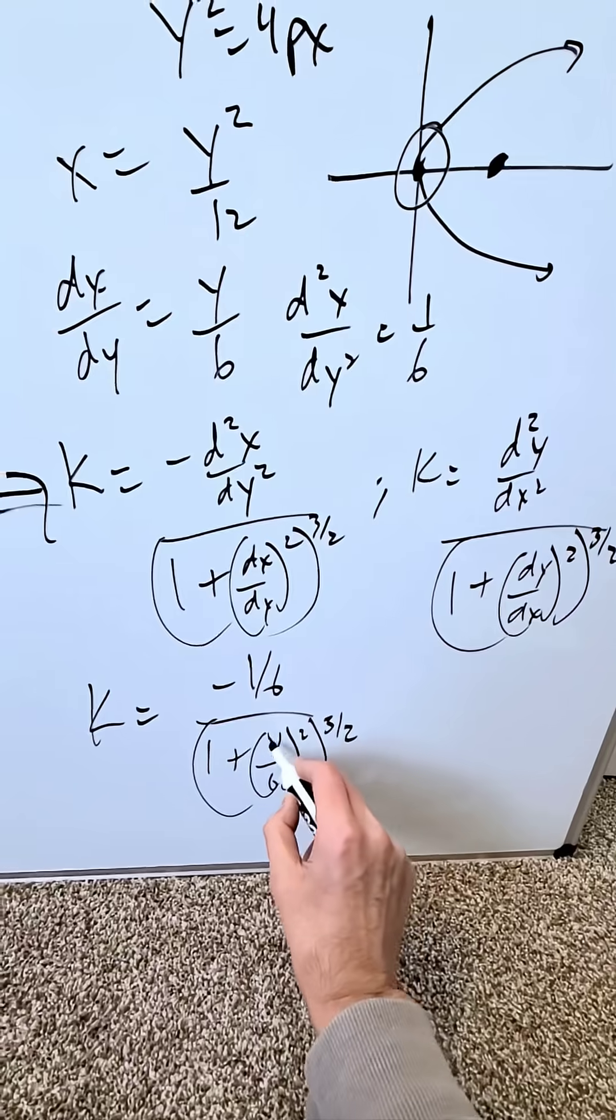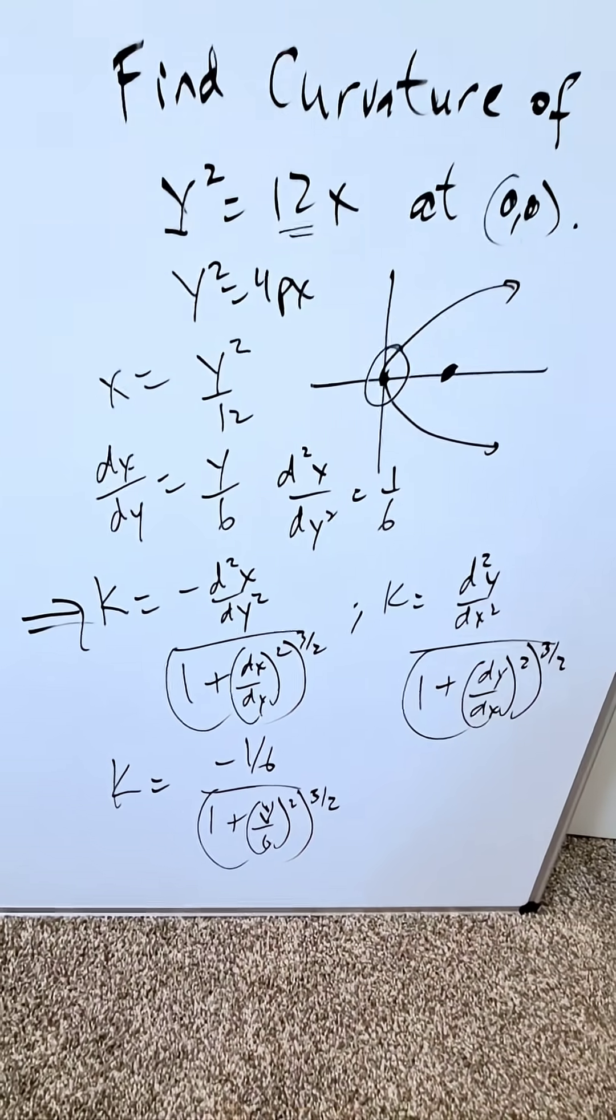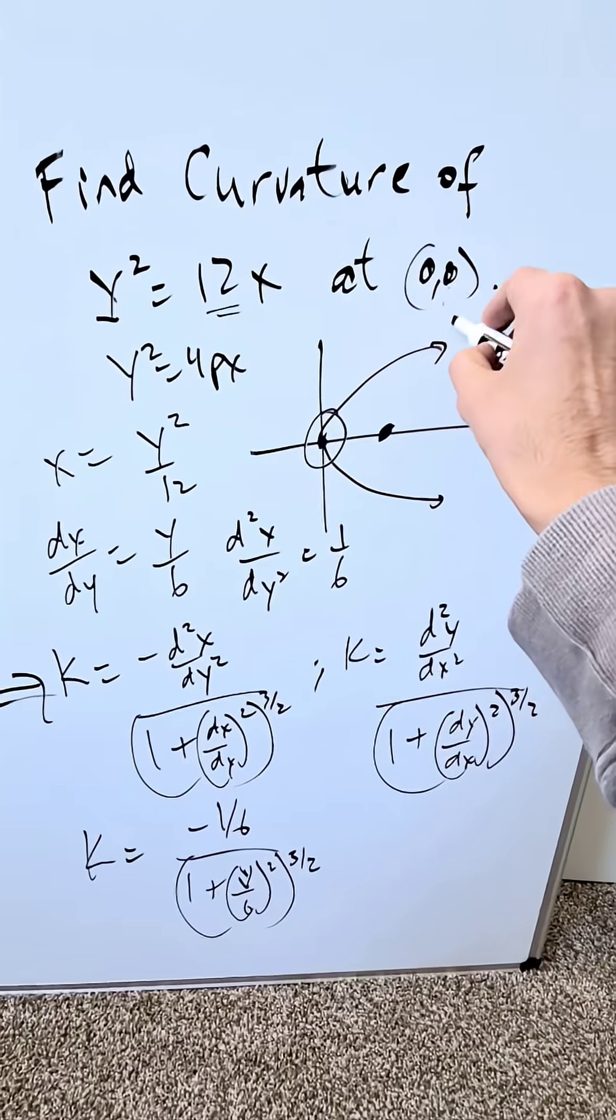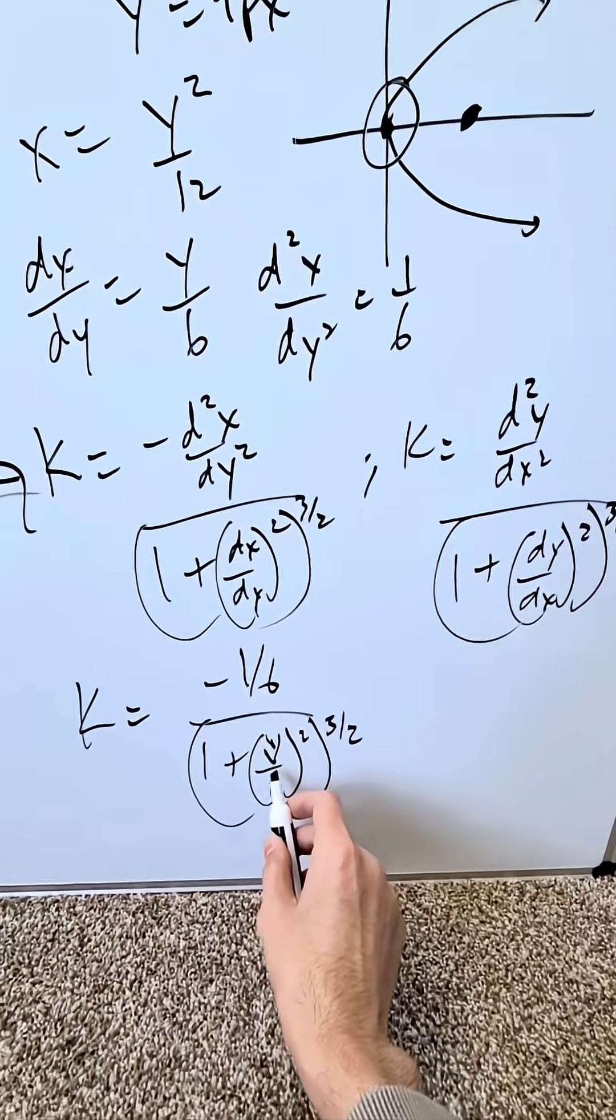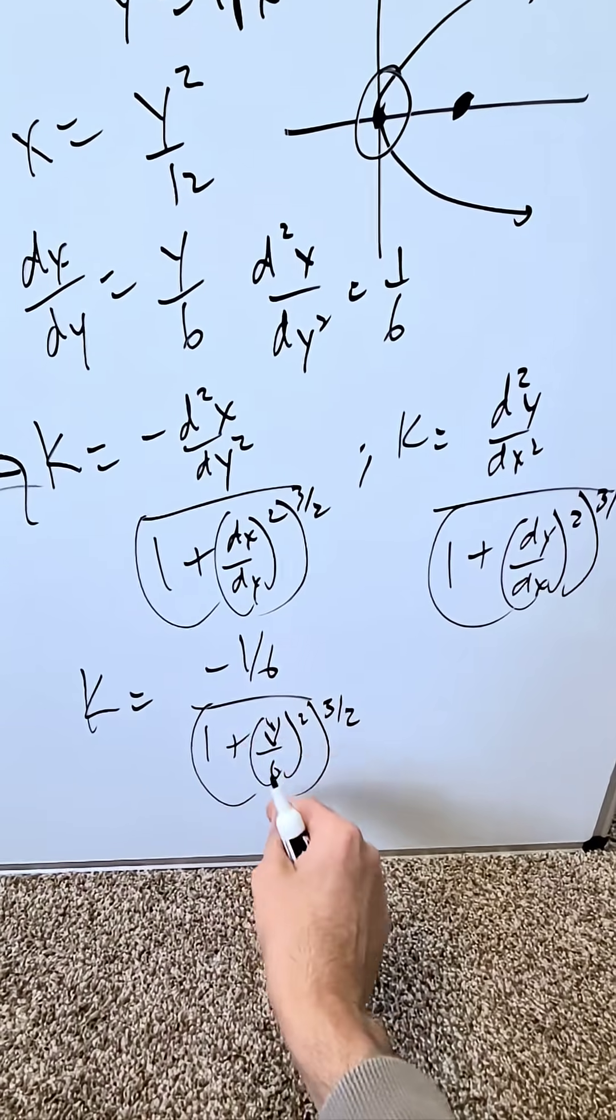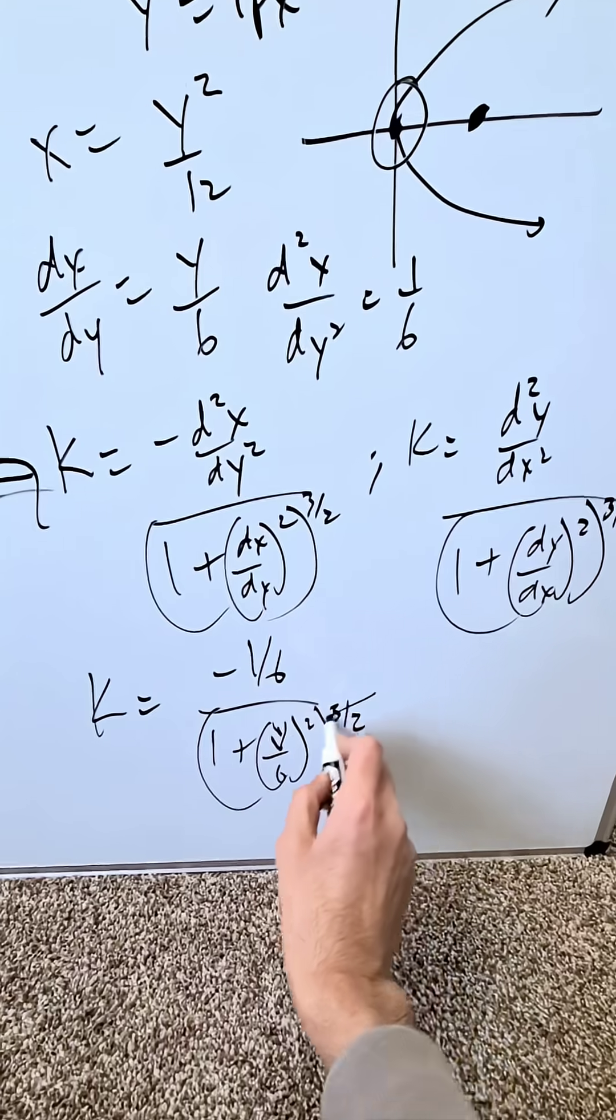How do I get it? I'm doing the curvature evaluation at the origin, so the y value is 0. If I put 0 here, I have 1 + 0² = 1. 1^(3/2) equals 1.